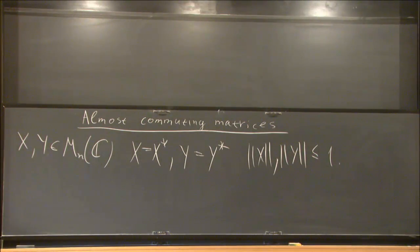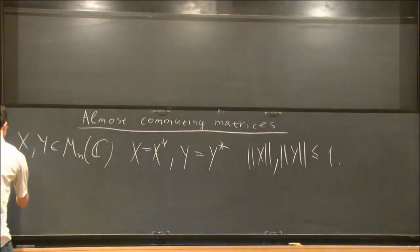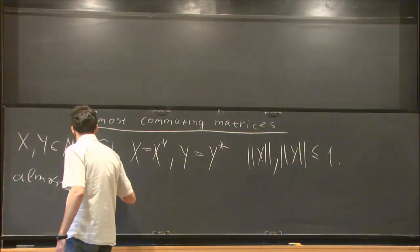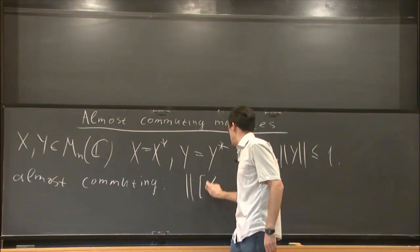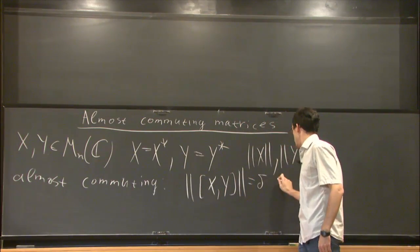We'll call them almost commuting informally if their commutator is small, also in the operator norm. So almost commuting if the norm of the commutator of these matrices, denoted by delta, is small.